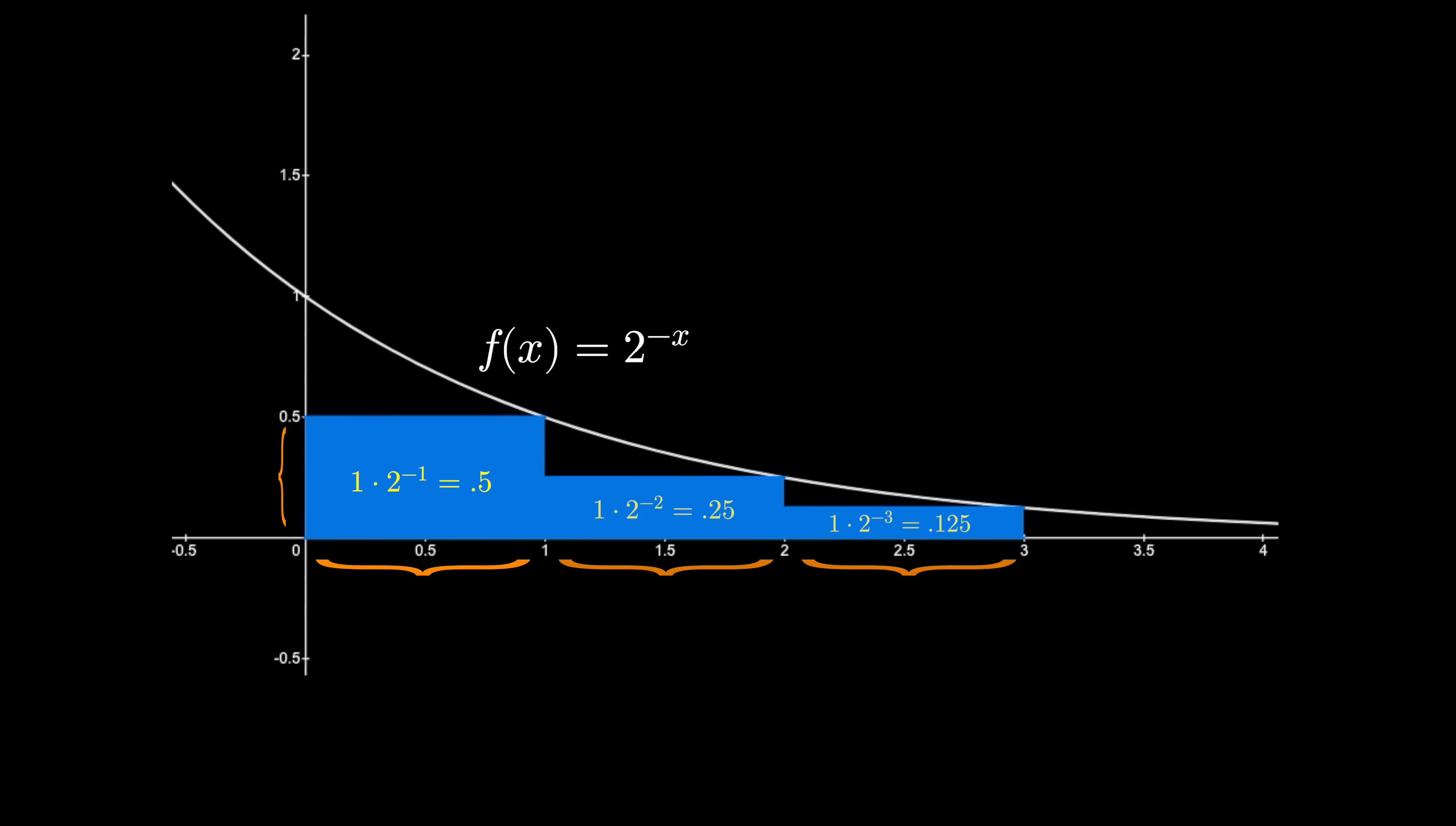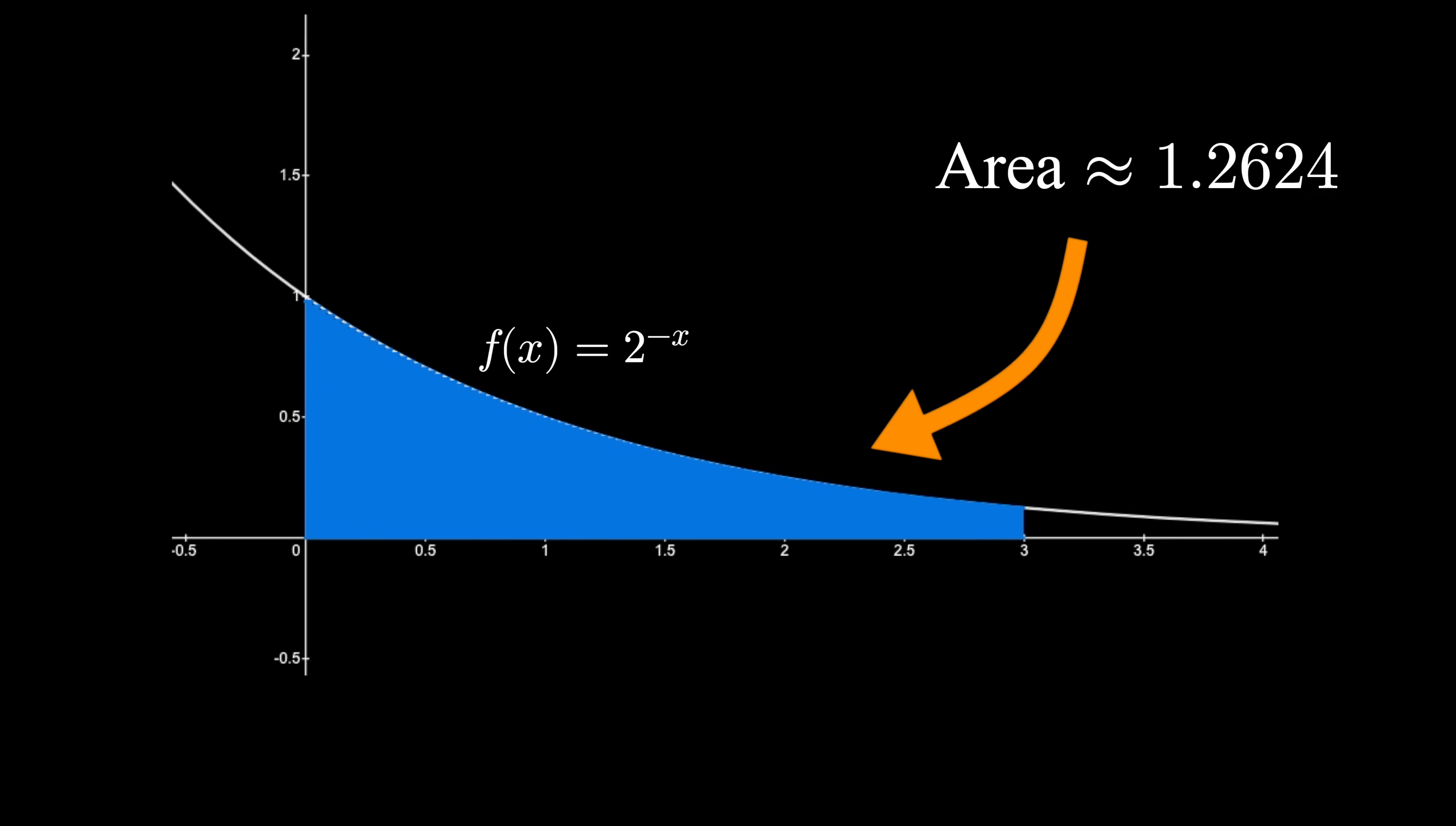Do that for each one and then add up all of the values. How about the area of these blocks? How about these? How about these blocks? Well, I guess they aren't really blocks anymore. It's just the area under the curve.